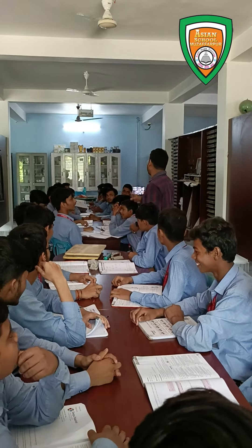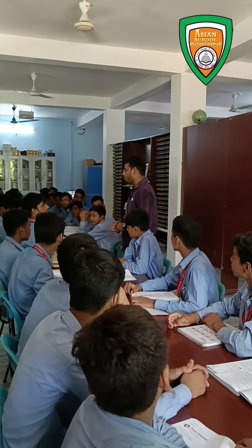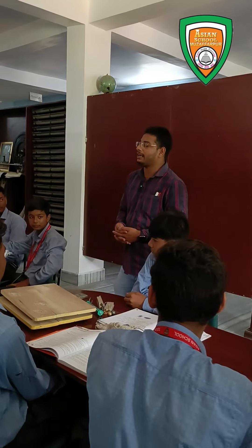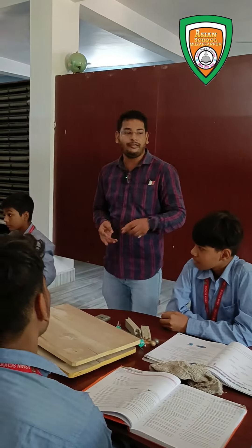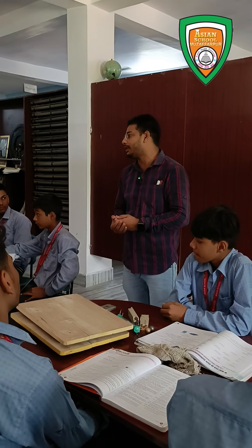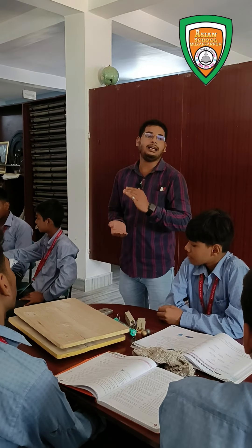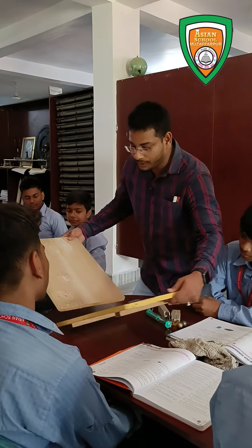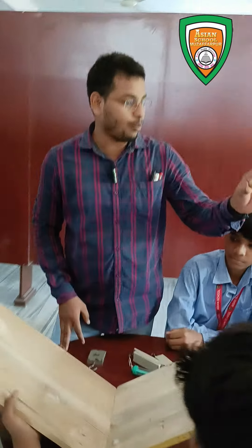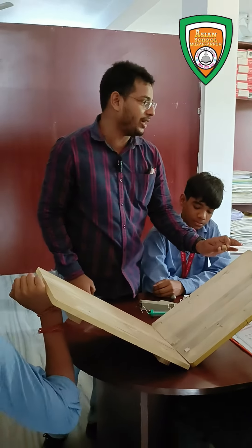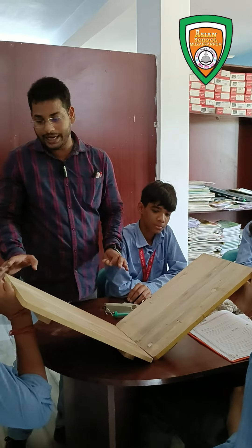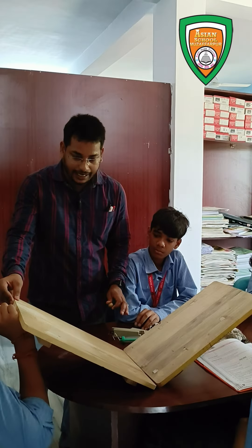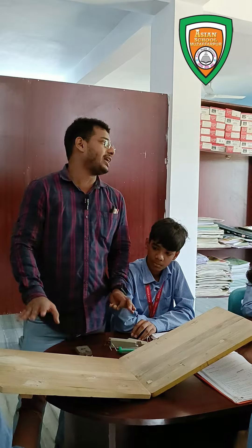Good morning students. Today we are going to study about Galileo's observations. Galileo picked up two inclined planes and said that when we roll a marble down an inclined plane, it will reach the same height from which it was released. As you see here, we have two inclined planes — if we roll a marble down from a height of 10 meters, it will reach the other side at the same height of 10 meters.